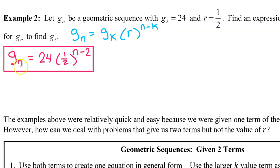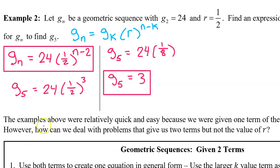This is one expression for gn. Now let's use it to find g5. Well, g5 will equal 24 times 1 half to the 5 minus 2 power. That's the third power. 1 to the third power is 1. 2 to the third power is 8. So 1 half to the third power will be 1 eighth. 24 times 1 eighth is the same as 24 divided by 8. So g5 is 3. That's it for example 2.